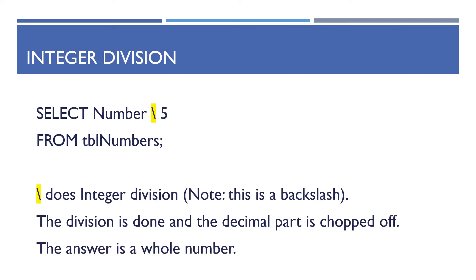For integer division use a backslash — the forward slash is normal division, the backslash gives you integer division, just like dividing an integer by an integer in Java. For example, 9 \ 5 gives 1, not 1.8 — the decimal part is chopped off.